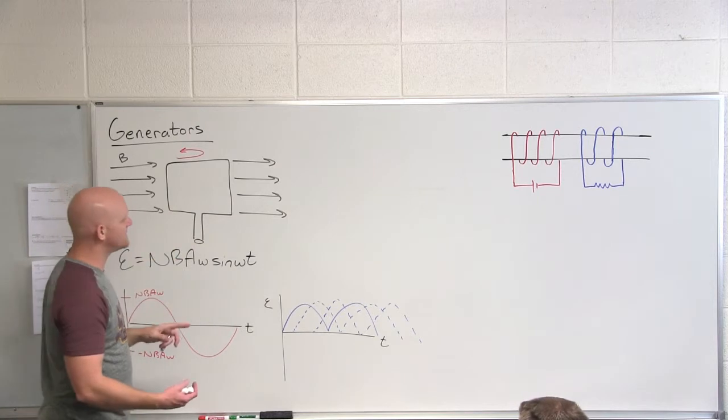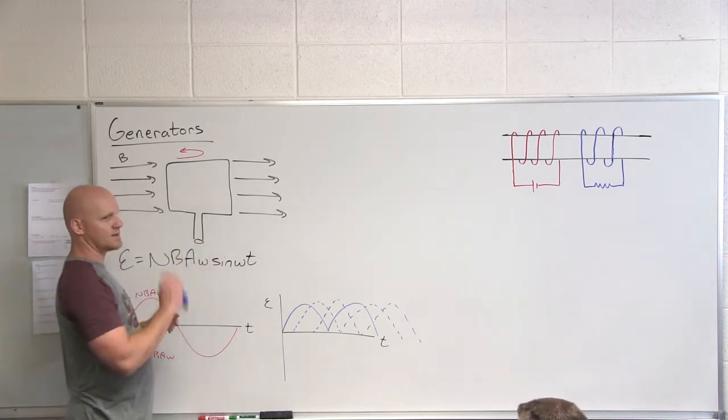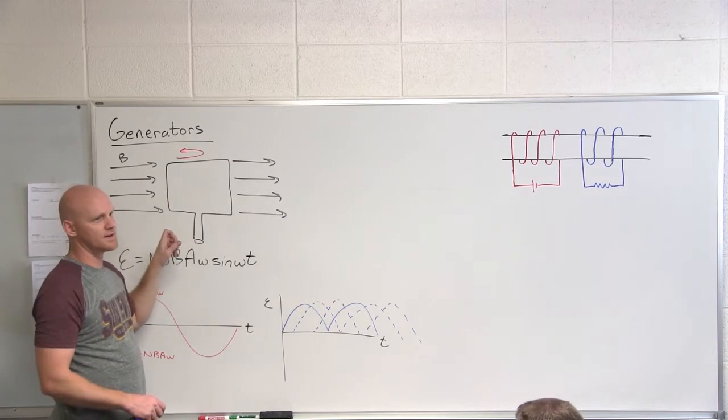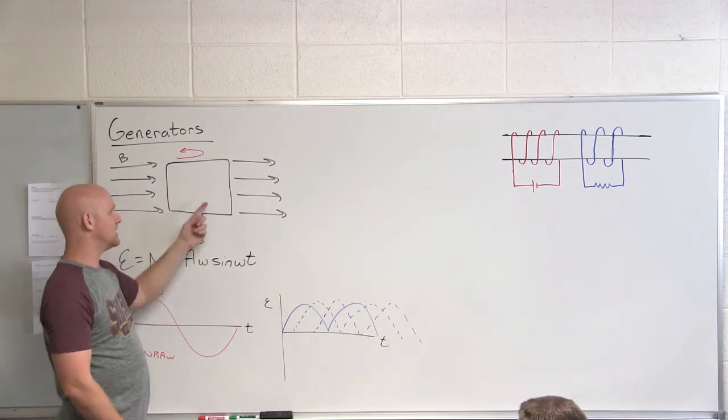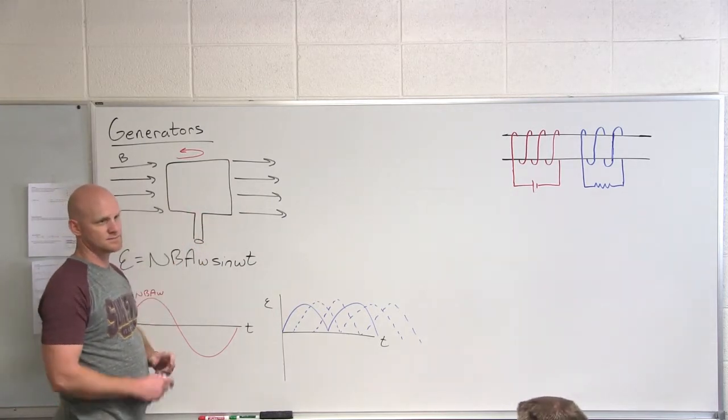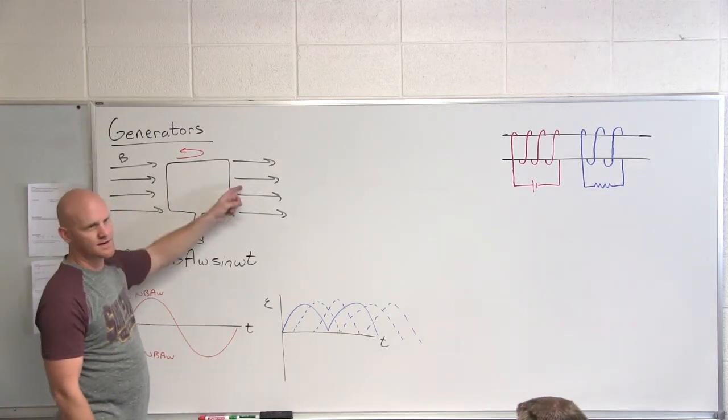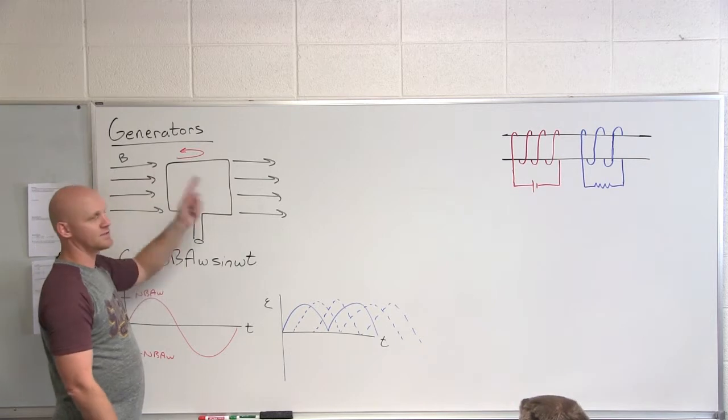But if we do the opposite, what if instead I pump a current through this coil in the constant magnetic field, that would actually cause what? So I'd have a current-carrying loop in a constant magnetic field and it would experience a torque and start to rotate.